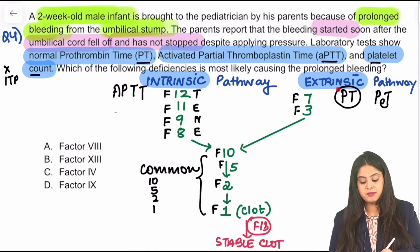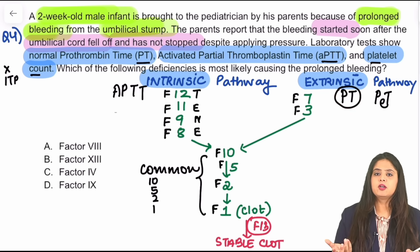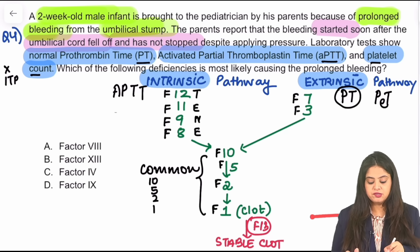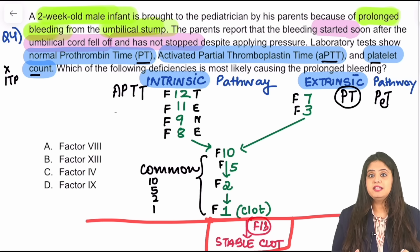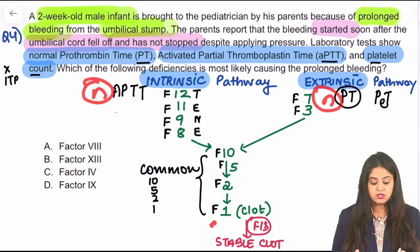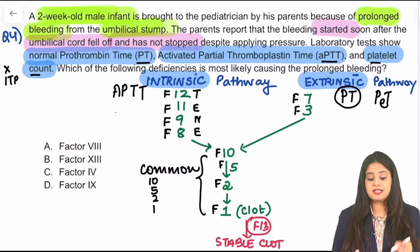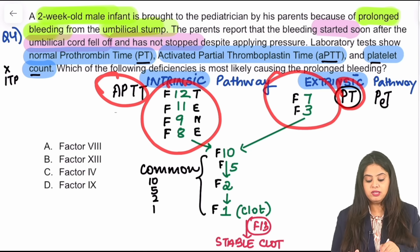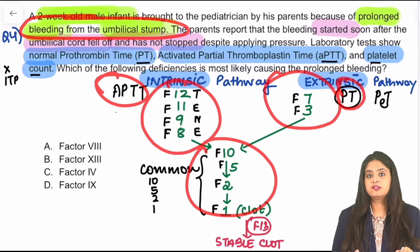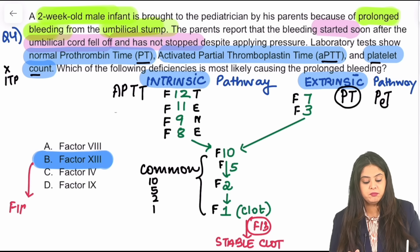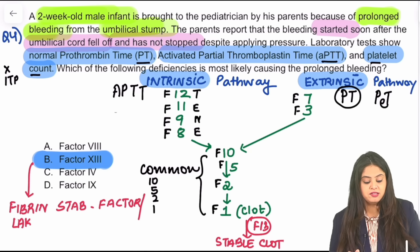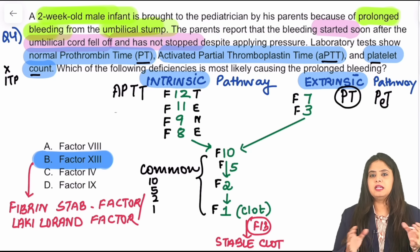The last factor is Factor 13 — the fibrin-stabilizing factor (also called the clot-stabilizing factor, or the Laki-Loránd factor). Importantly, the laboratory machines that measure PT and APTT only measure up to factor 1 — they do NOT measure Factor 13. So even if PT and APTT are normal, Factor 13 can still be deficient. In this infant with umbilical stump bleeding and normal PT/APTT, Factor 13 deficiency is the answer.